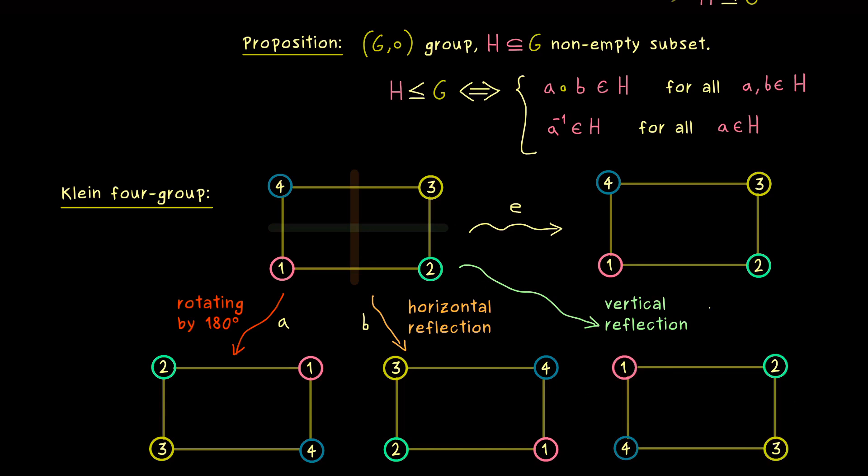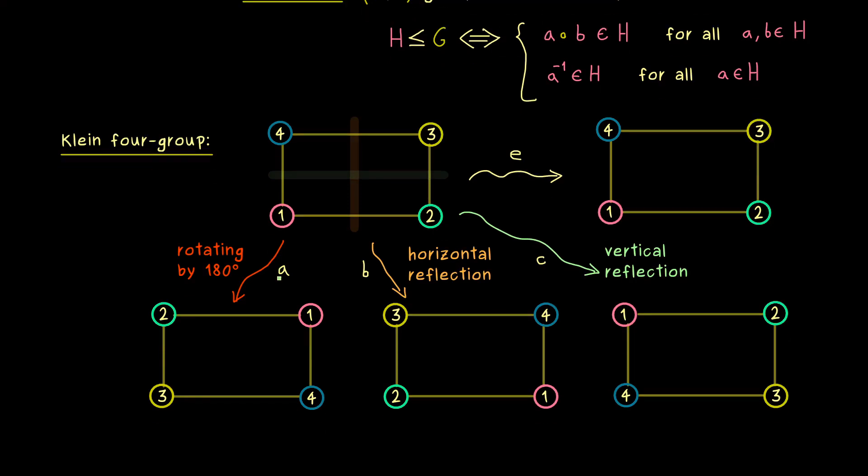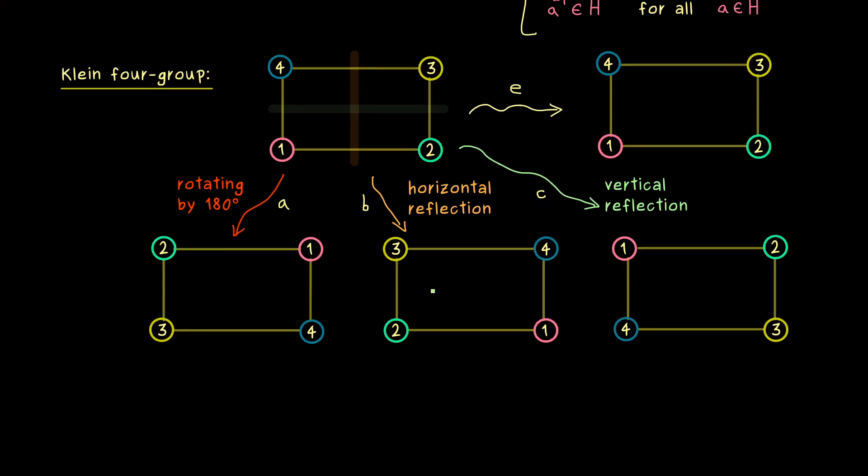There we will reflect with respect to this axis here. Hence, the enumeration we get out is this one. Let's call our operation C. That's it. These are all the symmetry operations we can do in such a rectangle, which is not a square. So you already see, we have our four elements.